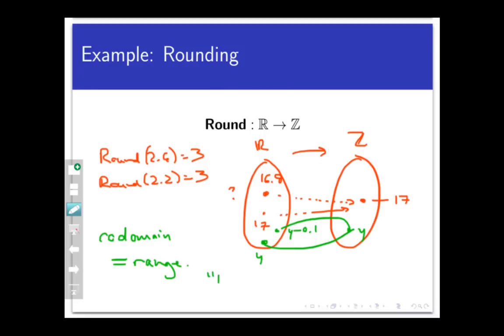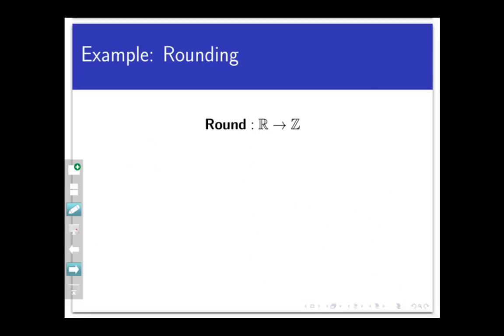Every point that can be hit by the function actually is hit by the function. So since every point in the codomain is actually hit by the function, we might call this the everything's covered property, because no point in the codomain is left uncovered by the function.